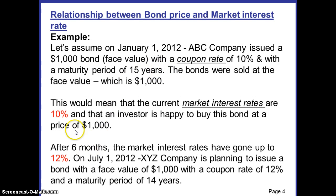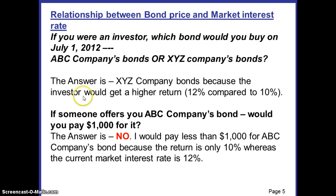The ABC Company bond carries a coupon rate of 10% and a face value of $1,000 — so if you buy it, you lend the company $1,000 and get a coupon interest rate of 10%. But if you buy the XYZ Company bond, you also pay $1,000 but in return get a coupon interest of 12%. The answer is simple: you would choose XYZ Company's bonds because you earn a higher rate of return with the same face value.